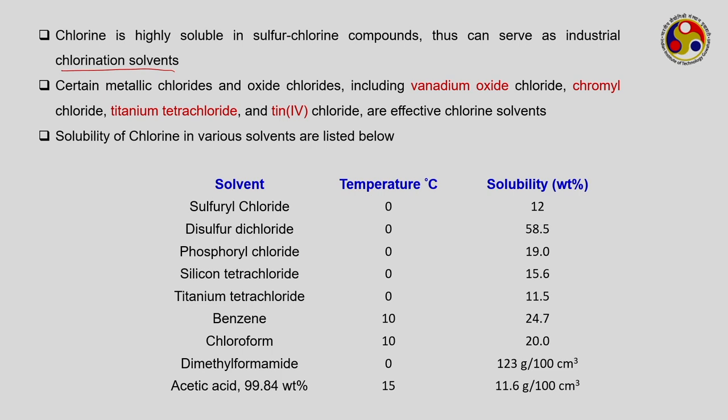The solubility of chlorine gas in various solvents is given at temperatures below ambient. These solvents include sulphur chloride, disulphur chloride, phosphoryl chloride, silicon tetrachloride, titanium tetrachloride, benzene, chloroform, dimethyl formamide, and acetic acid. The solubility weight percent shows that chlorine is most soluble in disulphur chloride, least soluble in sulphuryl chloride, and highly soluble in dimethyl formamide and acetic acid.